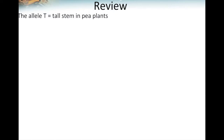Let's review before we start today's lesson on Punnett squares. Mendel's pea plants could either have tall stems or short stems. If a pea plant had tall stems, it was represented with the allele capital T, and since it's capital T, it's a dominant trait.